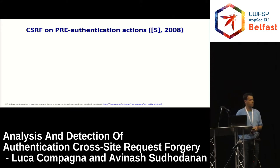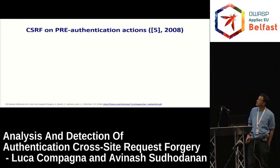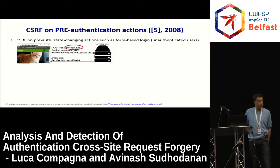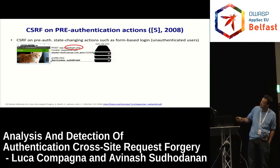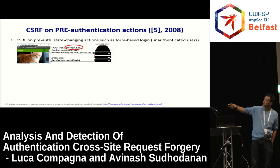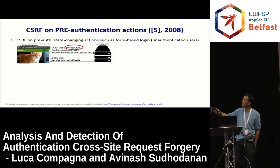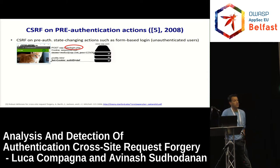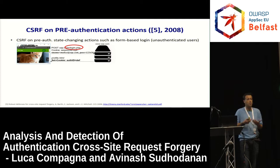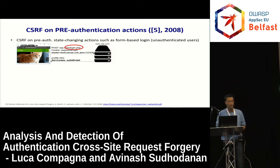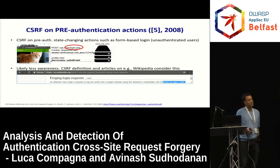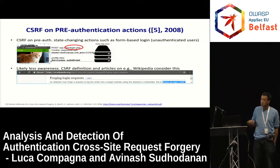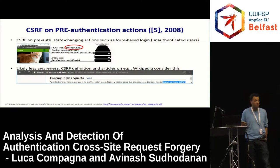The other variant is pre-authentication cross-site request forgery. Here, the victim doesn't yet have an authentication context with the website. The attacker can forge the login request, putting their own credentials there. If the website isn't protected, the victim will be logged into the website under the identity of the attacker — so they're in the attacker's account. From that moment on, the attacker can track what the victim is doing. This can be a privacy issue and can go beyond privacy, though there's probably less awareness in the community.